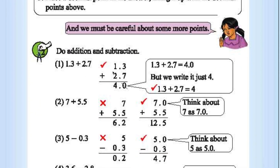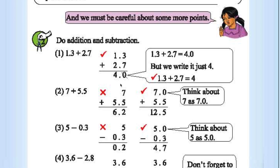1.3 plus 2.7: see carefully, 3 plus 7 is 10, so write 0 here and carry 1. Then 2 plus 1 plus 1 is 4. We write just 4 because a trailing zero has no value — we can omit the zero.